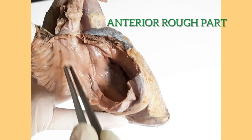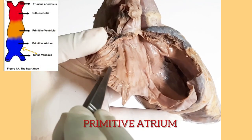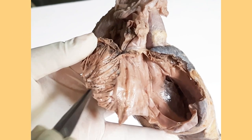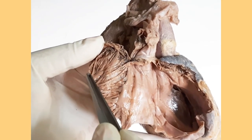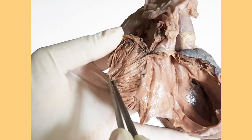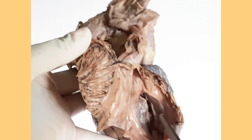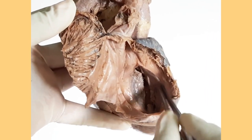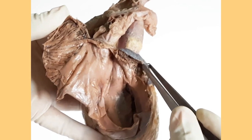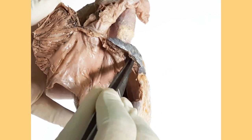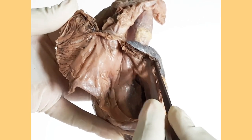The anterior rough part lies in front of the crista terminalis. It is derived from the right half of the primitive atrial chamber of the heart tube. It has numerous muscular ridges — the musculi pectinati — arising from the crista terminalis, running downwards and forwards towards the right atrioventricular opening, giving the appearance of teeth of a comb. These musculi pectinati form a mesh-like network in the right auricle, slowing blood flow and favoring thrombosis. In atrial fibrillation, this thrombus may become dislodged, leading to pulmonary embolism.